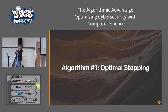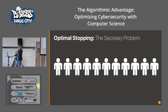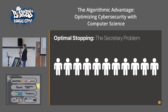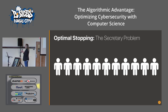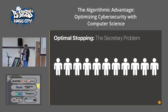The first algorithm is called the optimal stopping algorithm. To explain it, there's a really famous problem called the secretary problem. Basically the problem goes: let's say you need to hire an administrative assistant and you have a hundred resumes. Once you interview someone, you can either hire them — in which case you stop going through resumes — or you can pass on them and keep interviewing the next person. Once you pass on someone, you can't go back and hire them. So the problem of optimal stopping is: how many people do I interview before I hire someone?